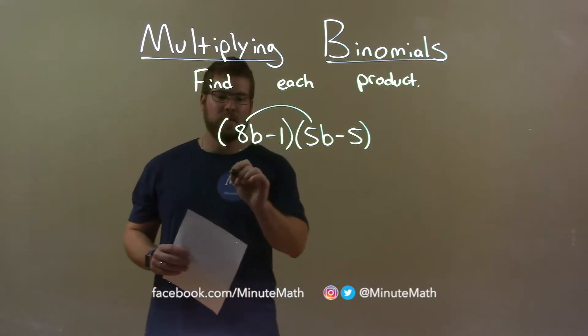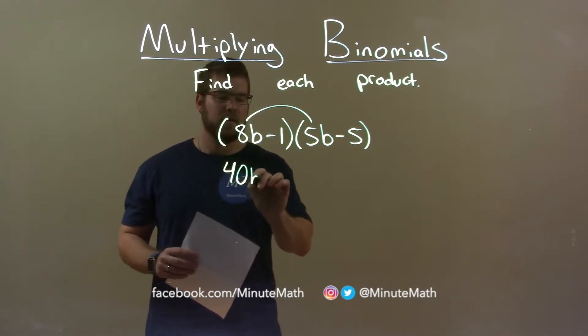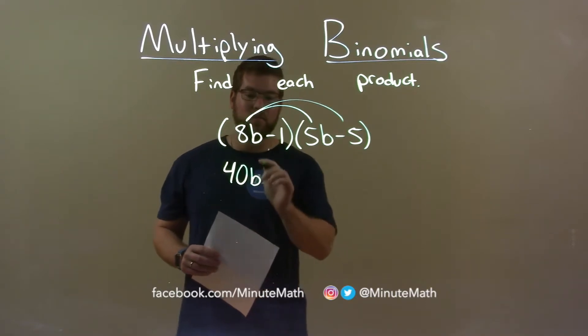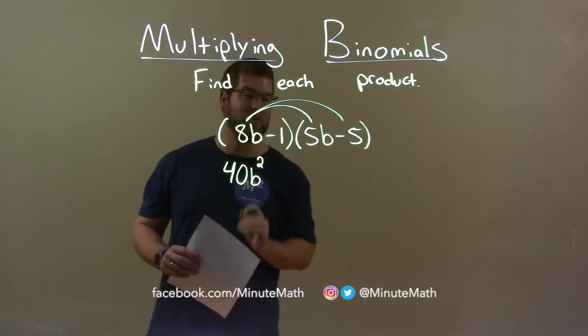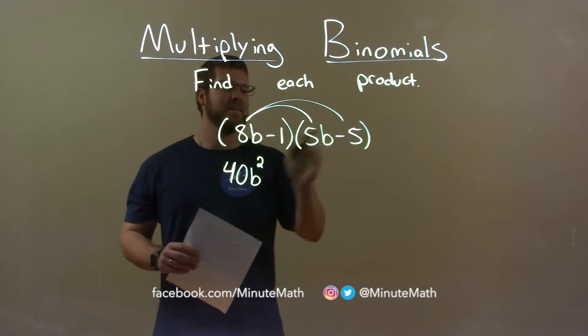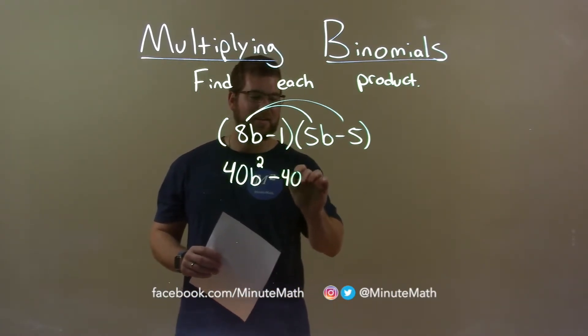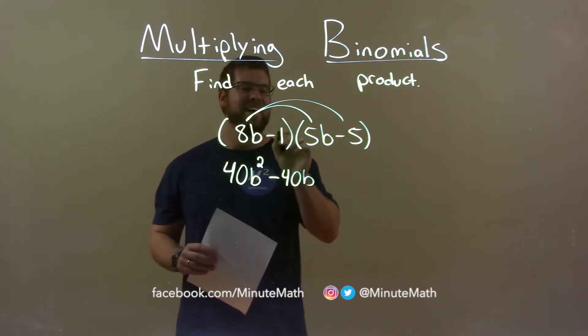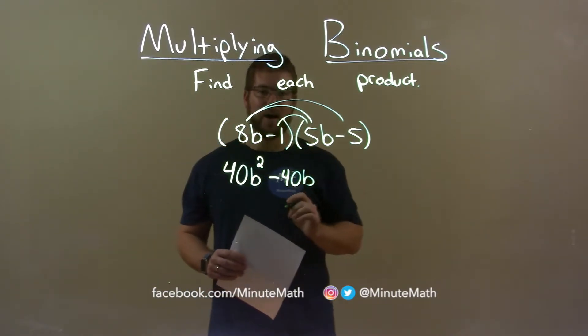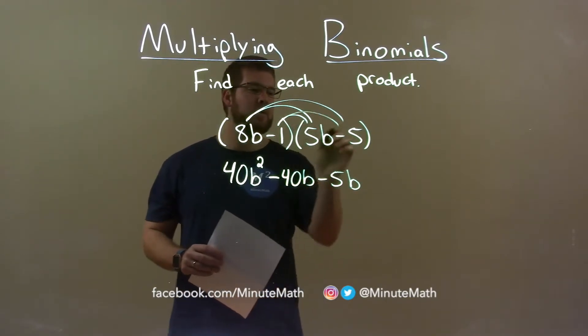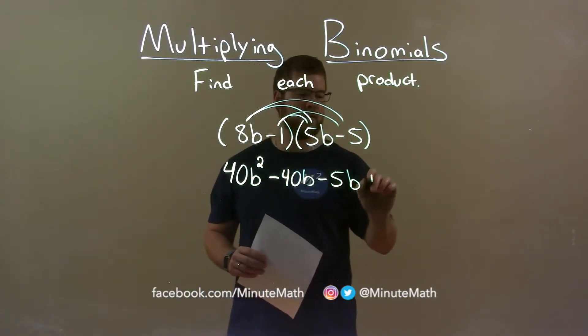So, 8b times 5b is 40b squared, excuse me, almost forgot that. 8b times minus 5 is minus 40b. Minus 1 times 5b is minus 5b and minus 1 times minus 5 is a positive 5.